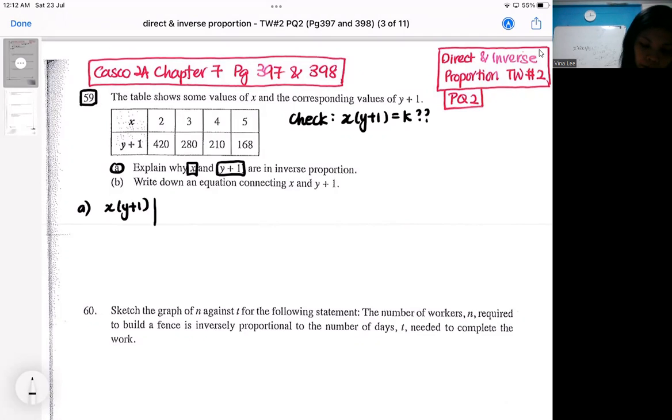You can create a table. So what if it's two times 420, three times 280, four times 210. So you do it for all the situations.